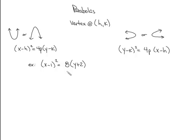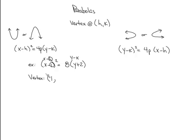We identify our vertex as H, K. We go to the x-parentheses: x − h is x − 1, so h = 1 (opposite of what it appears). For the y-parentheses: y − k is y + 2, so k = −2, because y − (−2) = y + 2. H and K are the opposite of what they appear to be.